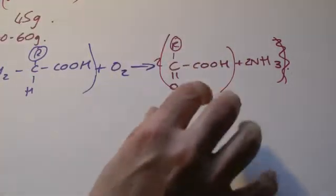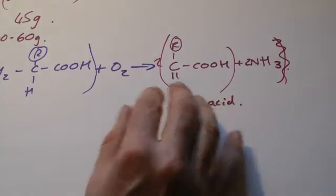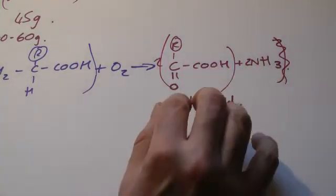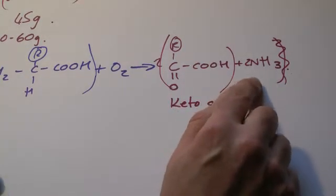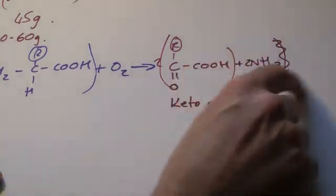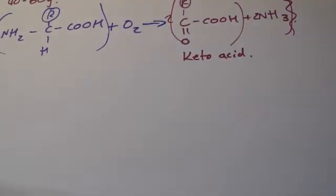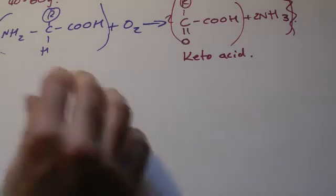So we've removed it. This here is called a keto acid, and lots of hydrogens still knocking around in here. This can be fed into a respiratory process and used as a respiratory substrate, so we can release energy from that. But the key bit here is we've now removed this ammonia. Now ammonia is very soluble and it's also very, very toxic, so it's not a good thing to have floating around.